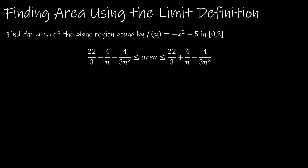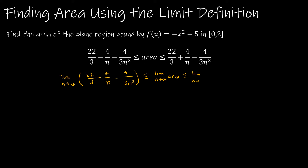So let's take a look at what happens if I find the limit as n approaches infinity of each part of this inequality. I'm going to take the limit as n approaches infinity of my first expression, the limit as n approaches infinity of the area, and the limit as n approaches infinity of my upper bound expression.